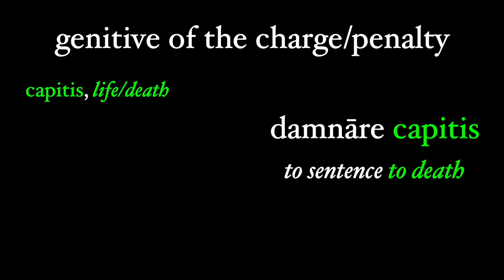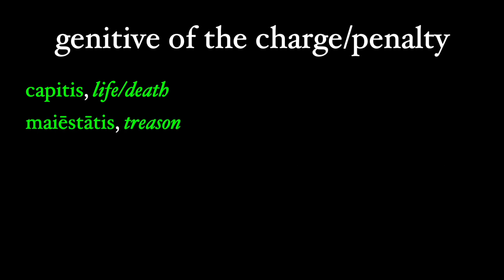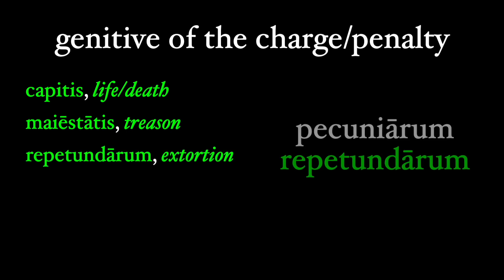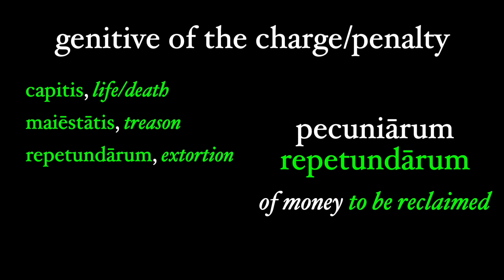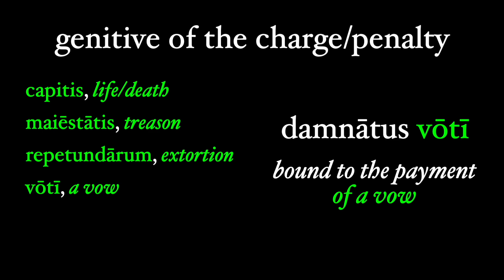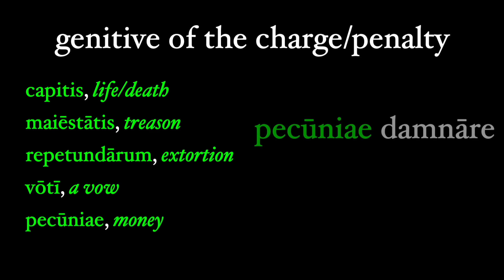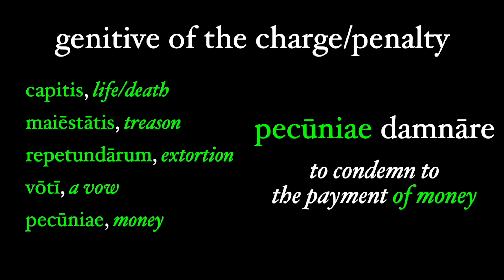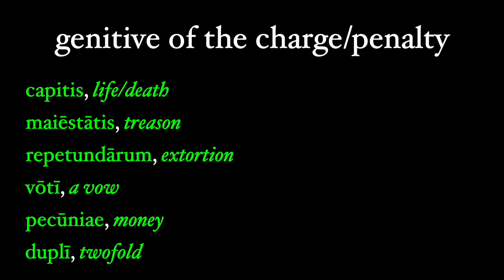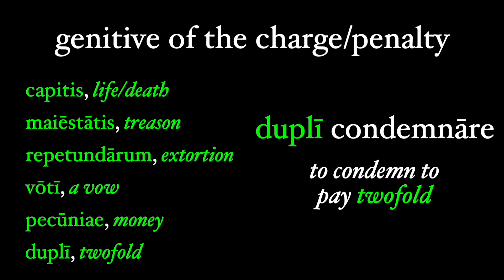In their grammar guide, Allen and Greenough list a set of genitives that fall under this rule commonly. Here they are: 'capitis', as in 'damnare capitis' — to sentence to death, like capital punishment where your head represents your life. 'Maiestatis' — treason, where 'maiestas' refers to the dignity of the country. 'Repetundarum' — extortion, meaning money a provincial governor would extract from the province, money that is to be reclaimed. 'Voti', as in 'voti damnatus' — bound to the payment of a vow. 'Pecuniae', as in 'pecuniae damnare' — to condemn to the payment of money. And 'dupli' or other proportional numerals, as in 'dupli condemnare' — to condemn to pay twofold.